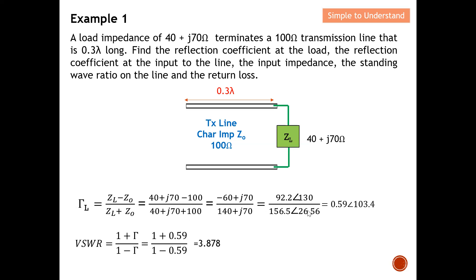Next, for the VSWR, using the formula with the magnitude of the reflection coefficient |Γ| = 0.59, punching the calculator gives VSWR = 3.878. So we have now found the reflection coefficient at the load and the VSWR through calculation.